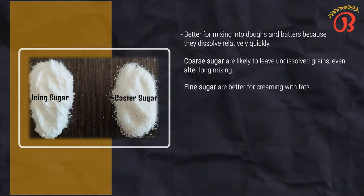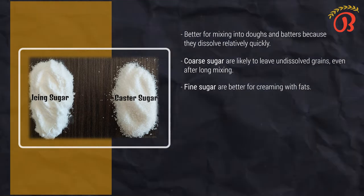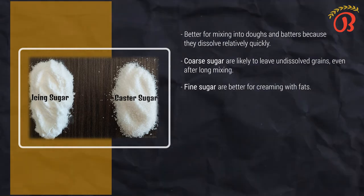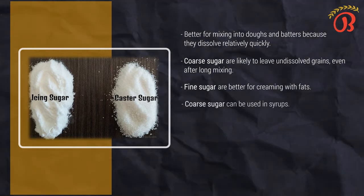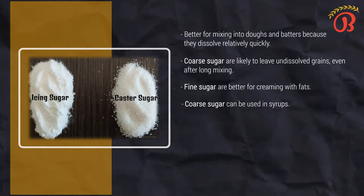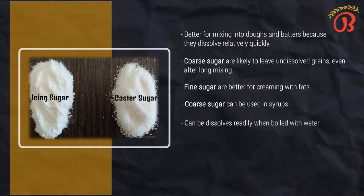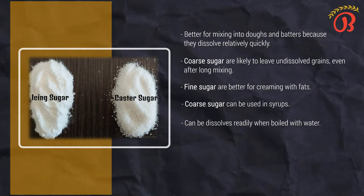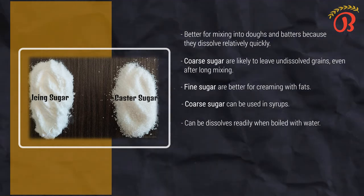Fine sugars are better for creaming with fats because they create finer, more uniform air cells and better volume. Coarse sugar, on the other hand, can be used in syrups where its mixing properties are not a factor. Even a very coarse sugar dissolves readily when boiled with water. In fact, coarse crystalline sugar is often purer than fine sugar and makes a cleaner syrup.